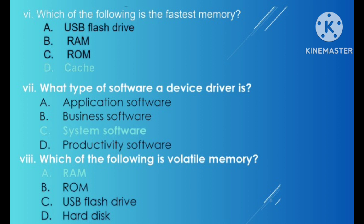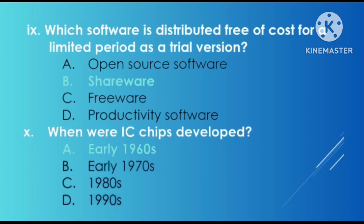MCQ eight: which of the following is volatile memory? The correct answer is RAM. MCQ nine: which software is distributed free of cost for a limited period as a trial version? Shareware is distributed free of cost for a limited period as a trial version. MCQ ten: when were IC chips developed? IC chips were developed in the early 1960s.